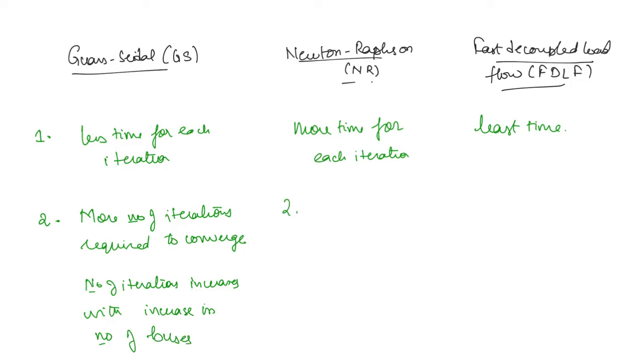In Newton-Raphson method, the number of iterations is less, and also it is not going to be much dependent on the number of buses. It is more or less going to be same. That is why for huge power systems Newton-Raphson is preferred.